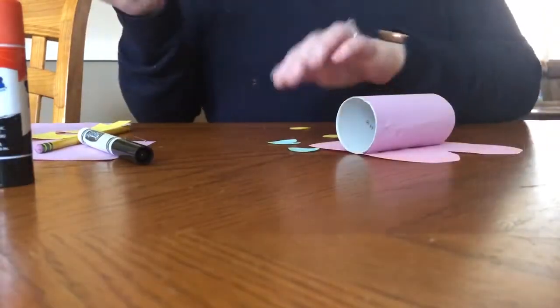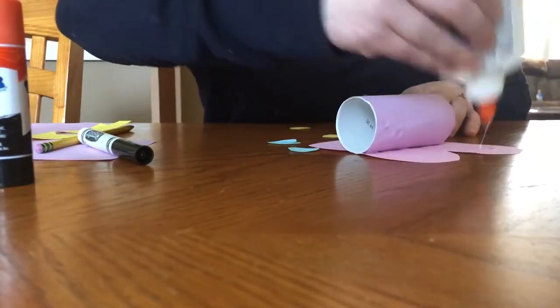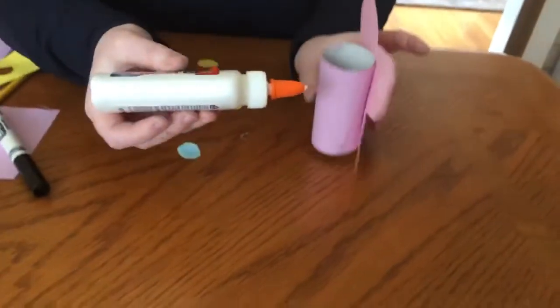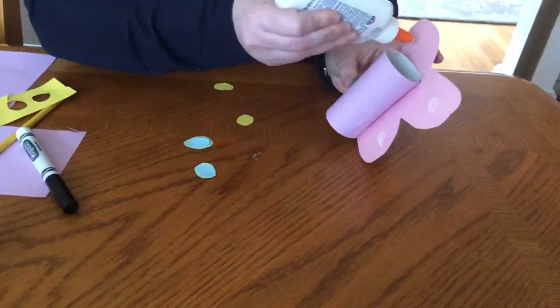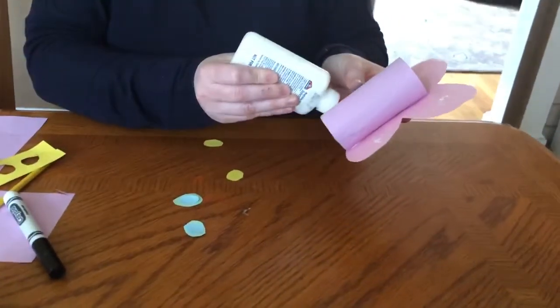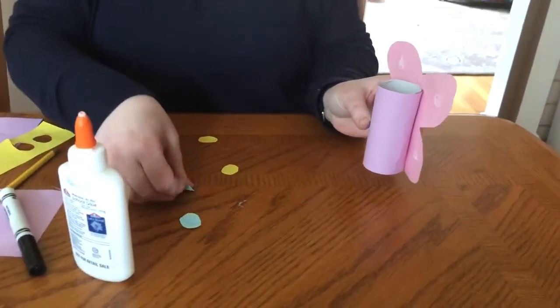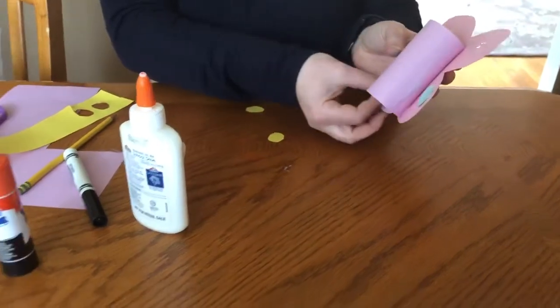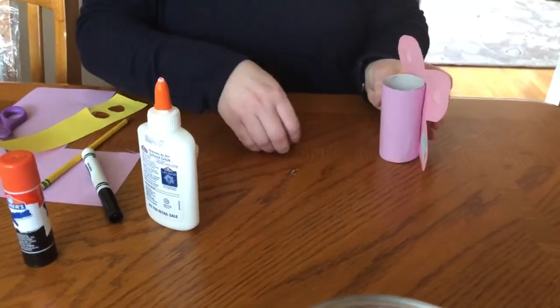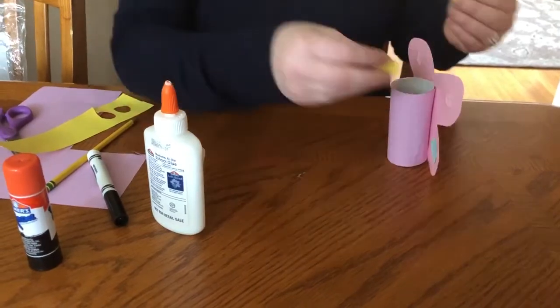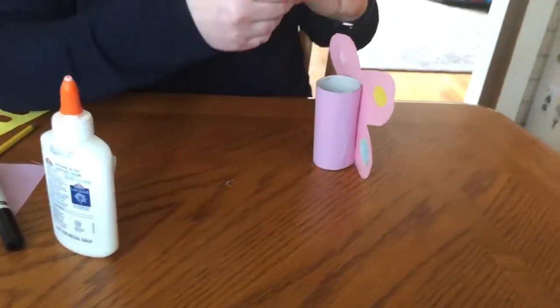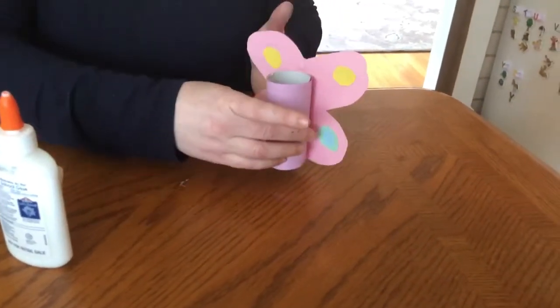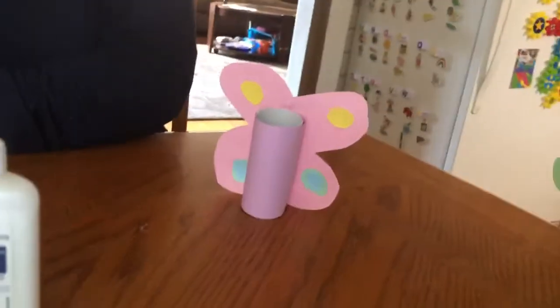So I'm going to take my glue, add a little bit of glue onto the wings. Maybe I'll use these colors down here. So using some other colors really brightens it up a bit. Then we need to add...